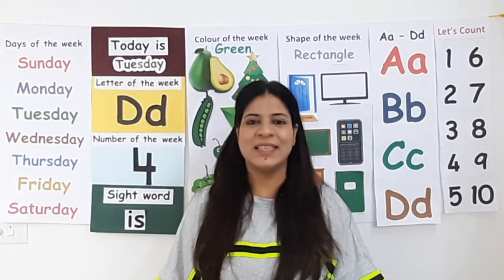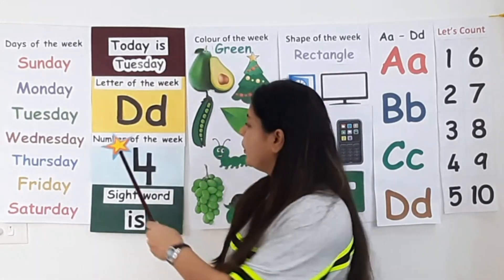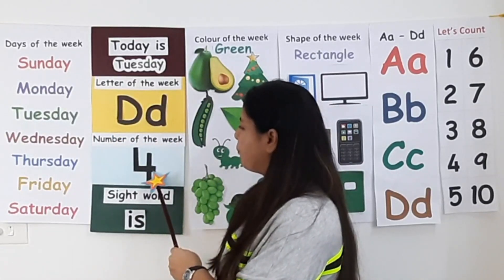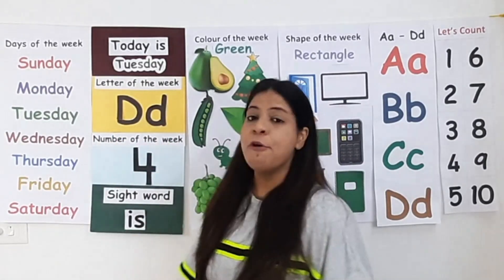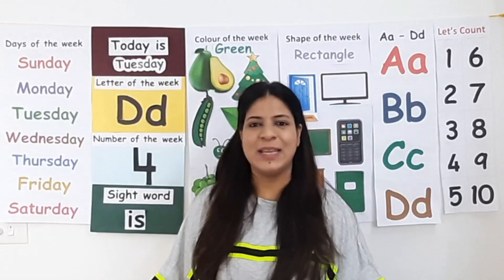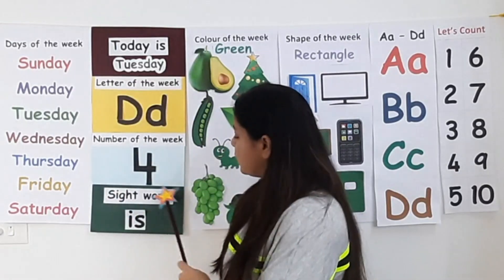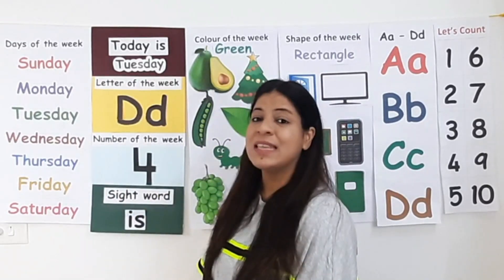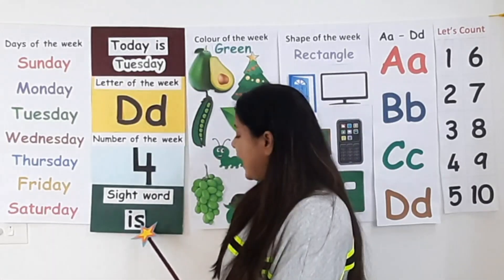Now let's see the number of the week. Number of the week is number four. Now let's see the sight word. Sight word is 'is'. Repeat after me: is.